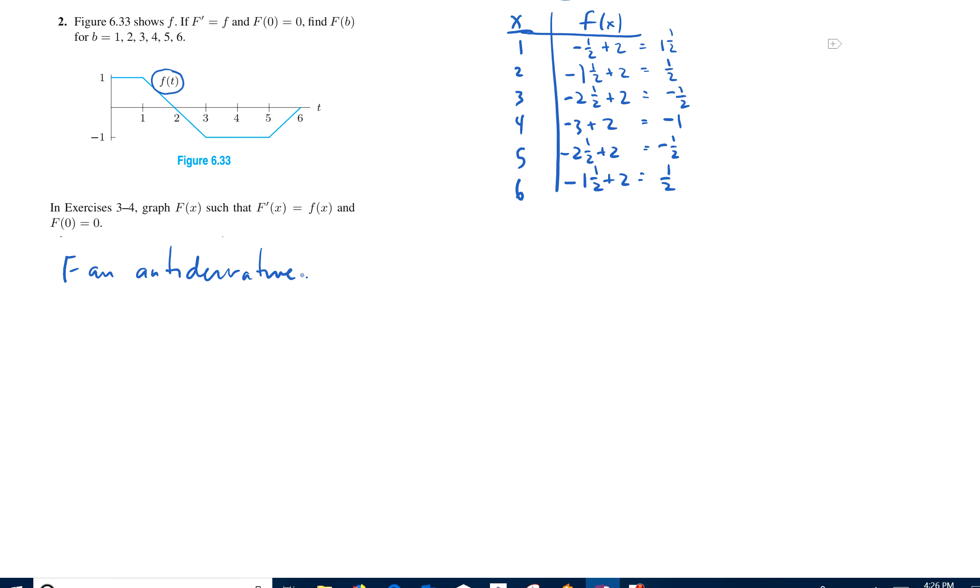They tell us what capital F of zero is, and we want to find F of B. So that makes me look at something like this. Zero to B, the integral of F of T, DT, is capital F of B minus capital F of zero, which is zero. All right.